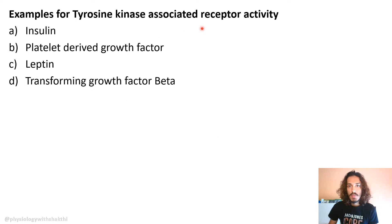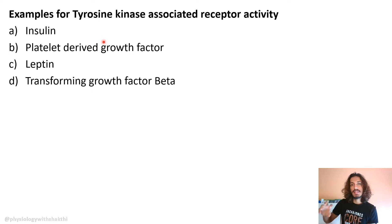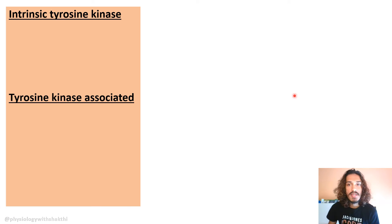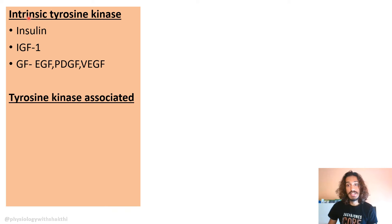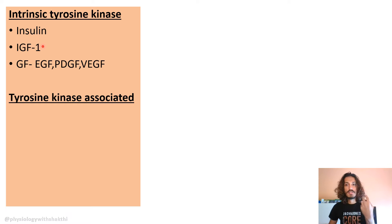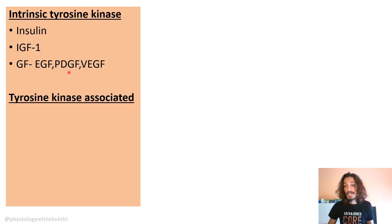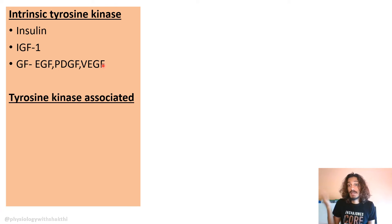Examples of tyrosine kinase-associated receptor activity — the answer is leptin. You need to understand intrinsic tyrosine kinase activity versus tyrosine kinase-associated receptor activity. For intrinsic tyrosine kinase activity, the examples include insulin, insulin growth factor 1, and growth factors such as epidermal growth factor, platelet-derived growth factor, and vascular endothelial growth factor.